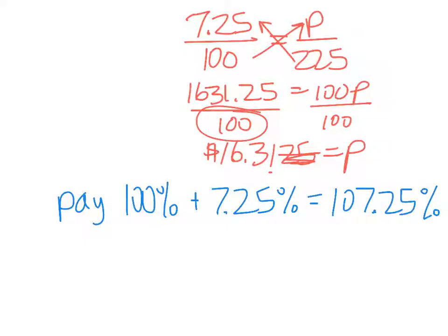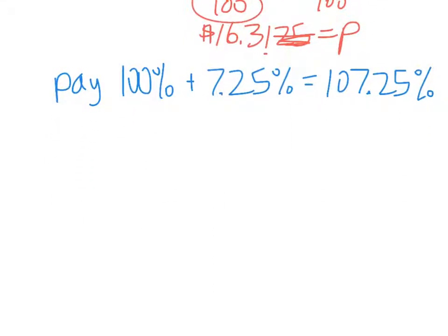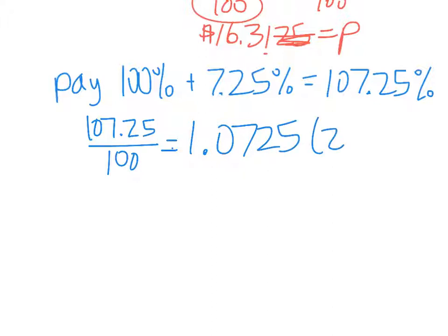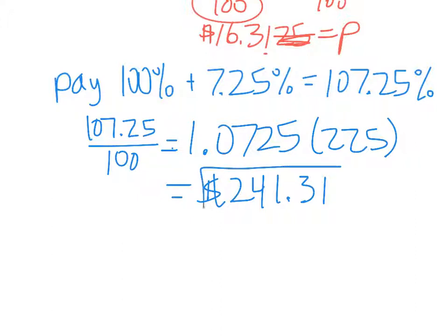And again, we have those two methods. I can either turn that into a decimal by dividing 107.25 by 100, and that equals 1.0725, and then multiply that by the 225. And that immediately gives me the $241.31 and 25 cents. So again, we truncate the 25.